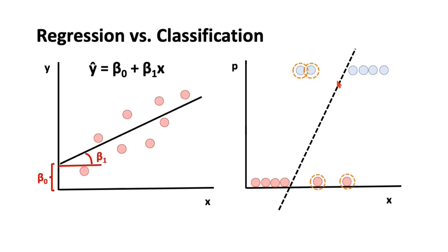If we generalize with the help of this line, we would not make offers to some people, but in reality those people actually went for a term deposit. Similarly, some points below the line would have been considered for targeting, but those people actually did not go for a term deposit. In supervised learning, the ground truth is already reported to us, and using that fact and historical data, we try to come up with a model.